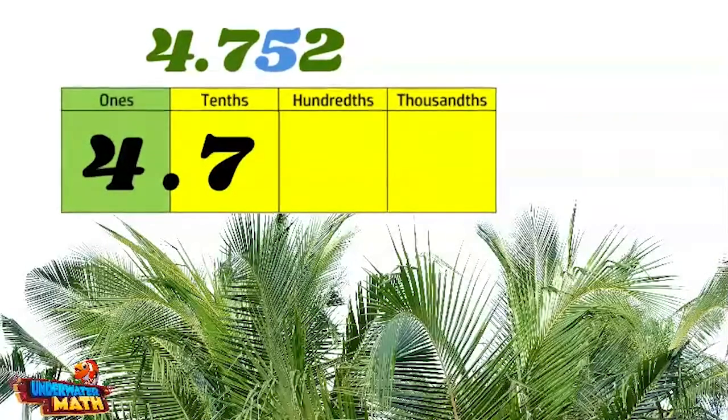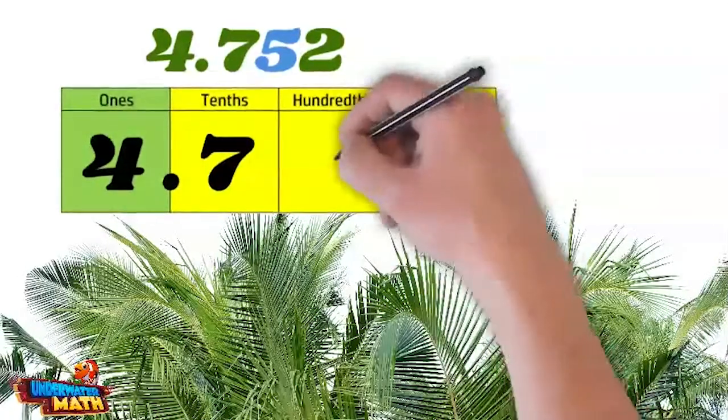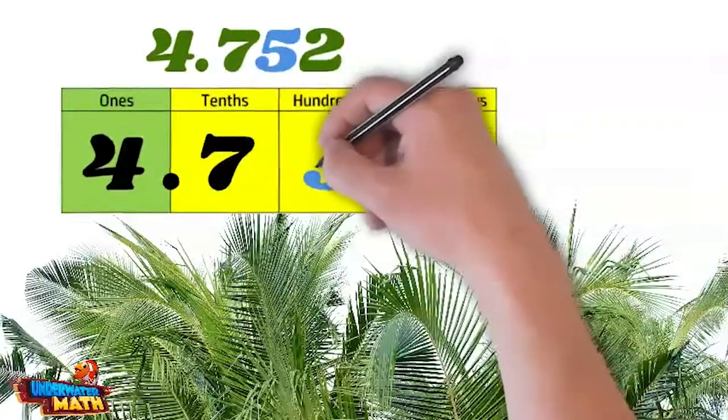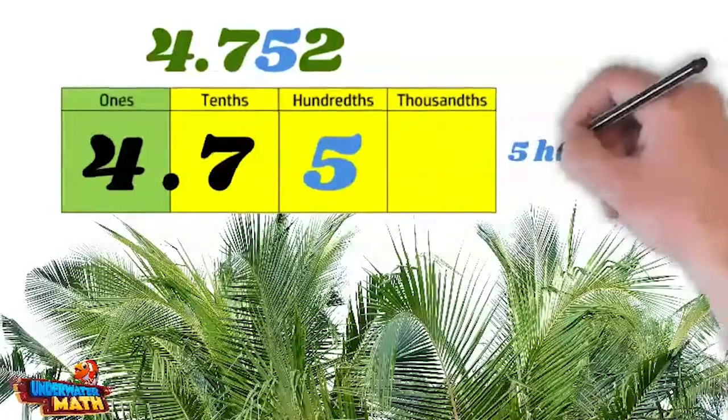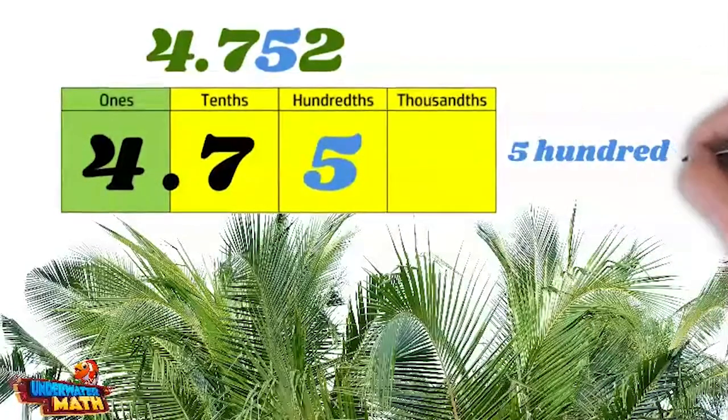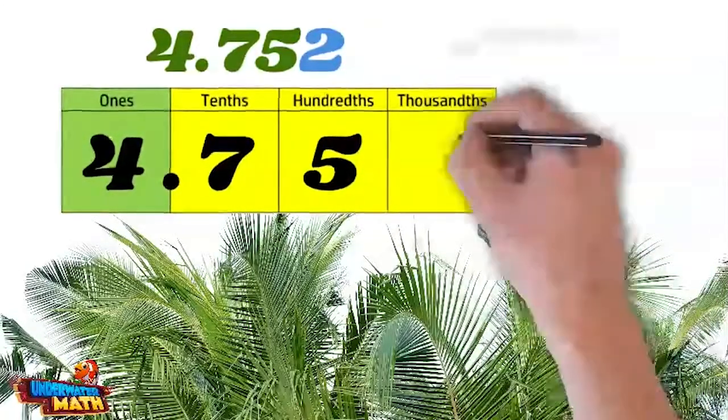It's the same in the hundredths place. This number has a five in the hundredths place, so the five has a value of five hundredths. Want to take a guess at the value of the two that's in the thousandths place?